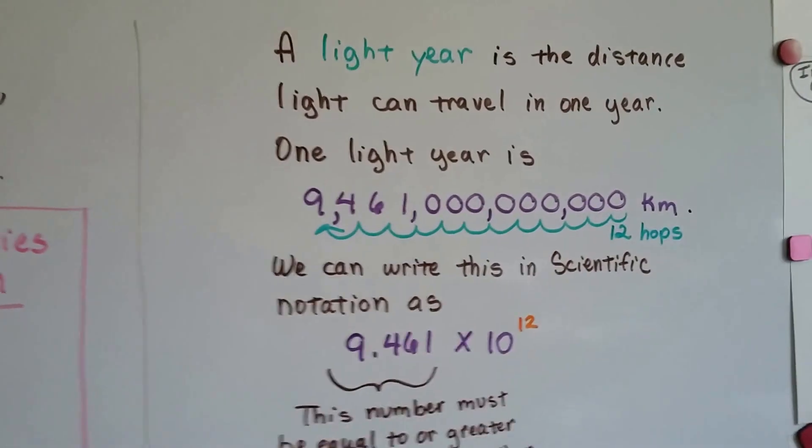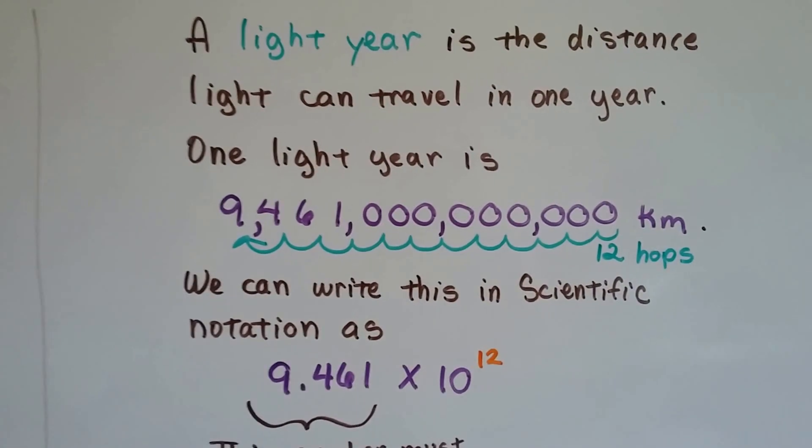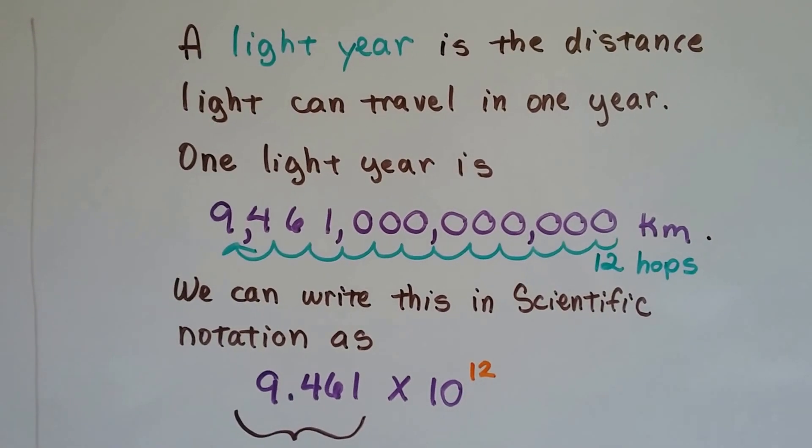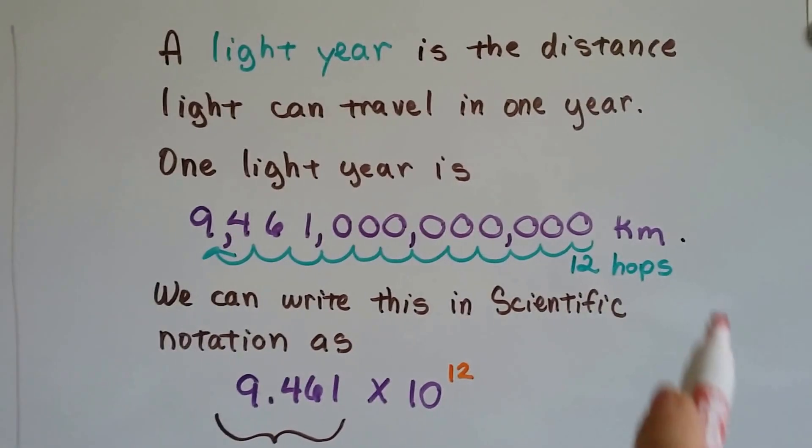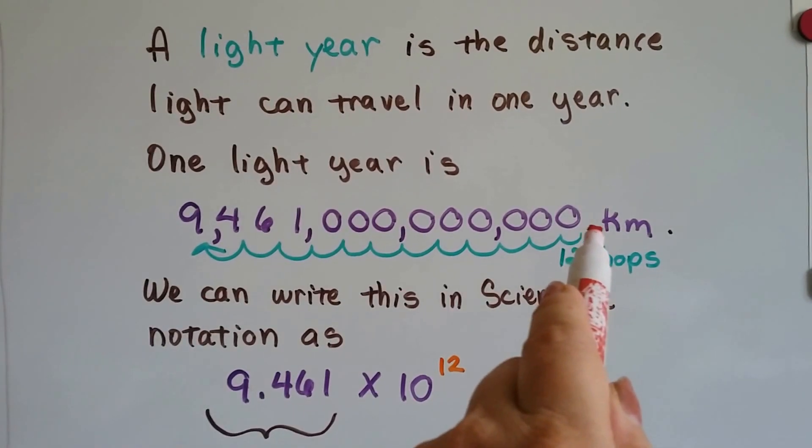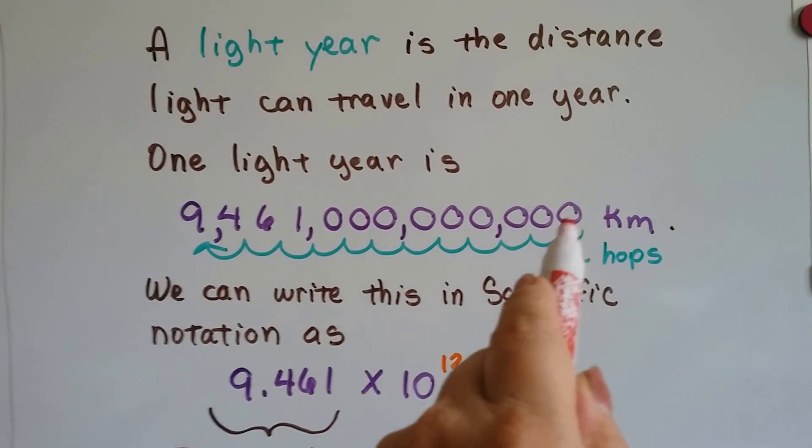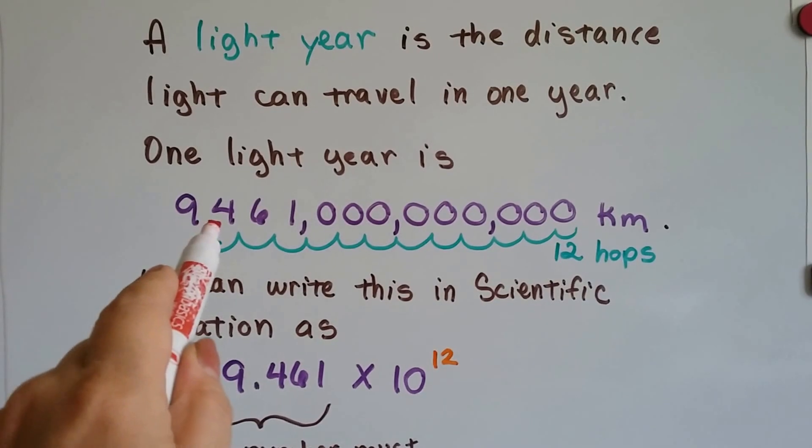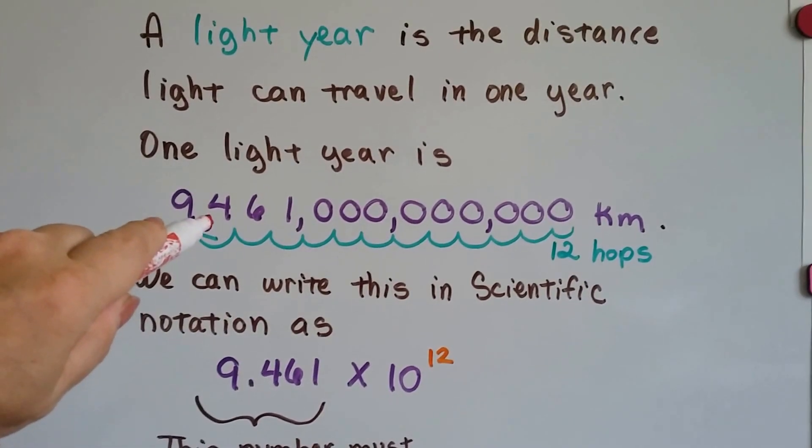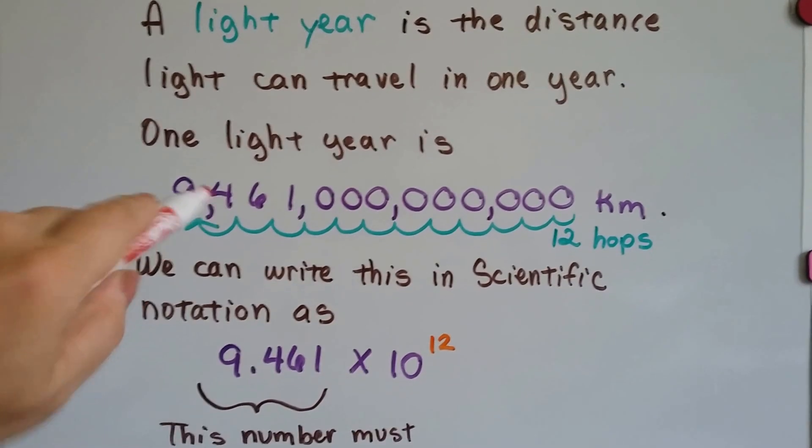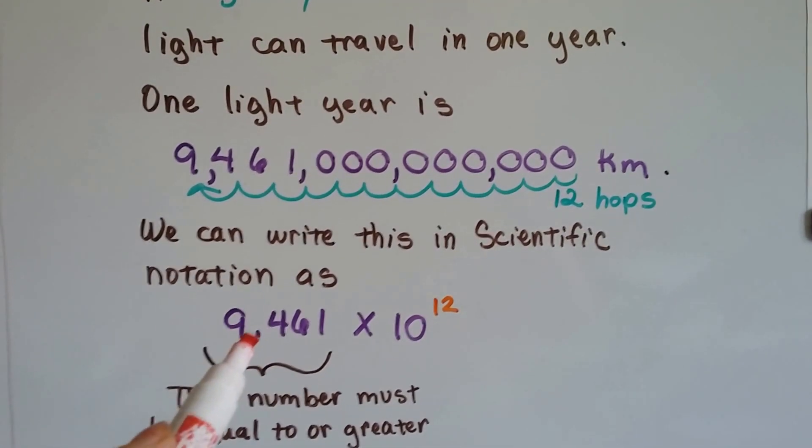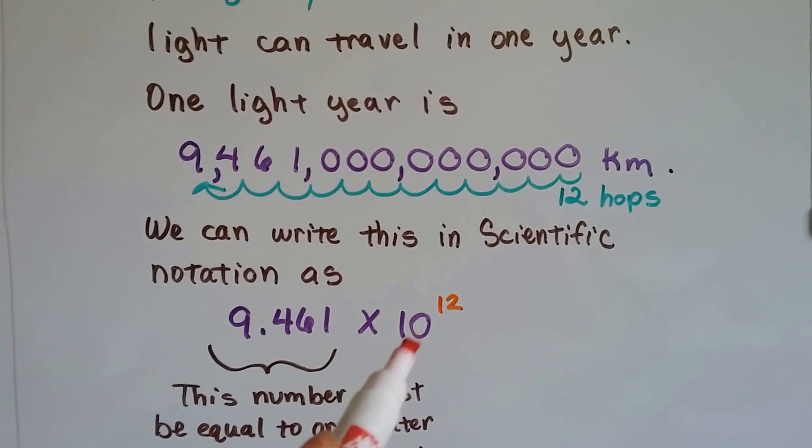A light year is the distance light can travel in one year. One light year is 9,461,000,000,000,000 kilometers. If we counted all these hops from the decimal point being right here, we would count 12 hops to get between the 9 and the 4. So we can write this in scientific notation as 9.461 times 10 to the 12th.